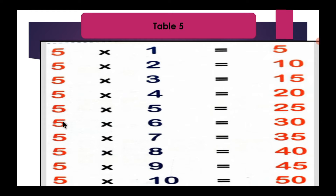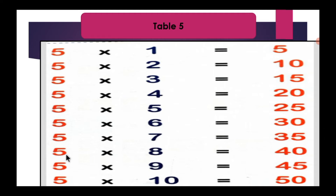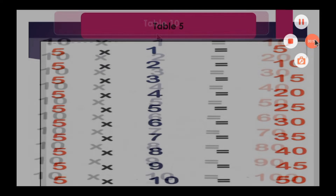5 sixes are 30, 5 sevens are 35, 5 eights are 40, 5 nines are 45, 5 tens are 50.